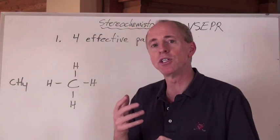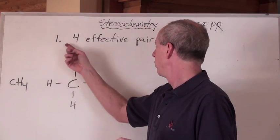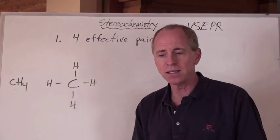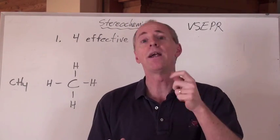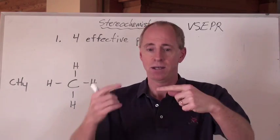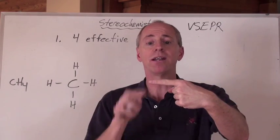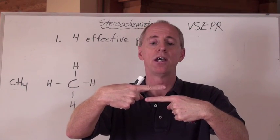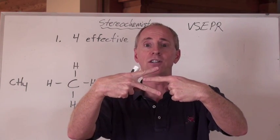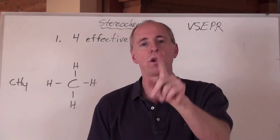And to help us to determine shapes, like this word here, four effective pairs, what does that mean? Well, when you're counting effective pairs, you do this. A lone pair is an effective pair. A bonding, a bond, a single bond is an effective pair. But a double bond sounds like two effective pairs, but it's not. You count all multiple bonds, single, double, or triple, you count them as one effective pair.